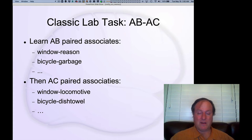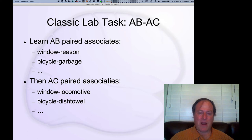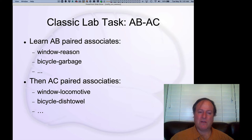You're told to encode them, and then you get tested later. What went with 'window'? What went with 'bicycle'? After you learn the A-B list well, you then learn the A-C list, which uses the same A items but repaired with novel C items — now 'locomotive,' 'dish towel,' for example. The key importance of this paradigm is that this new C-item pairing creates the potential for interference with the previous memory of 'window-reason,' because you've got the same A item involved in both memories.